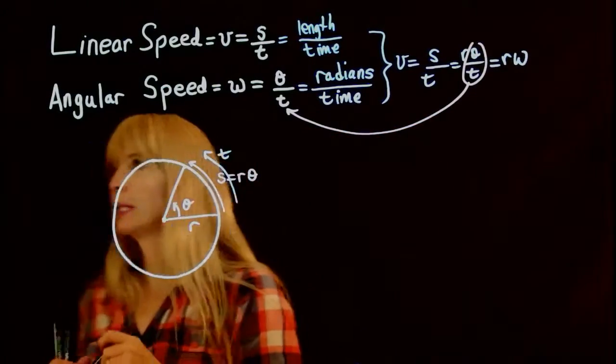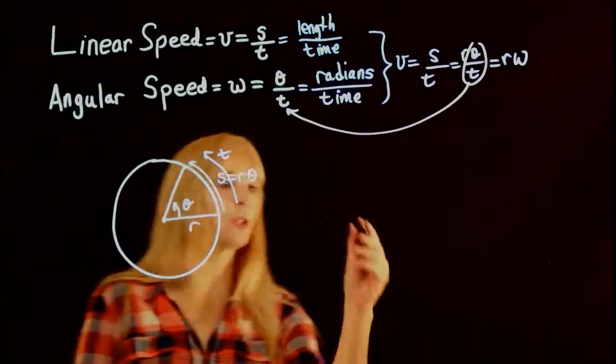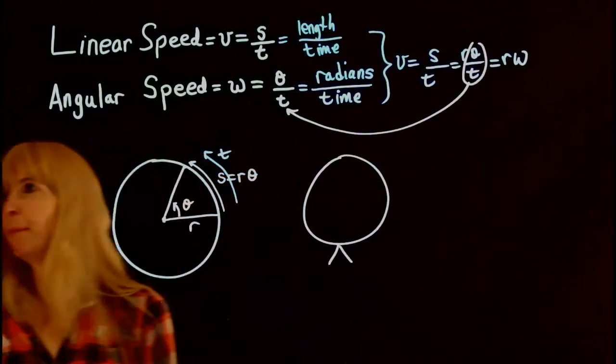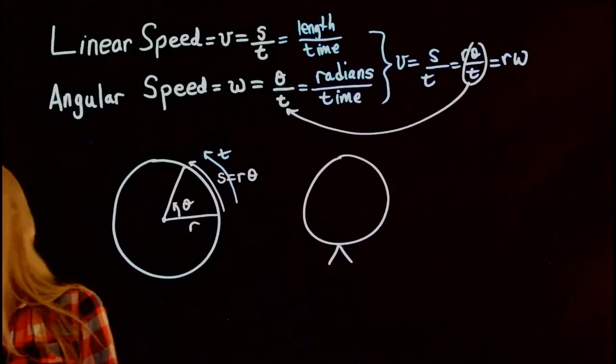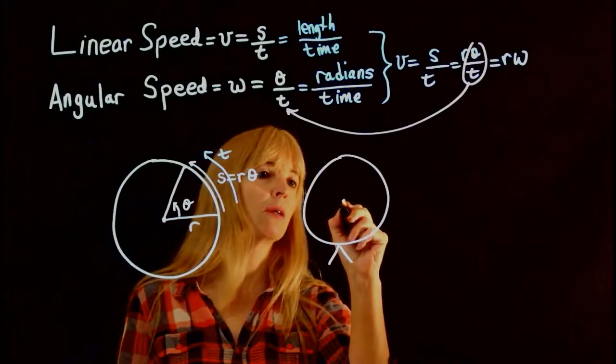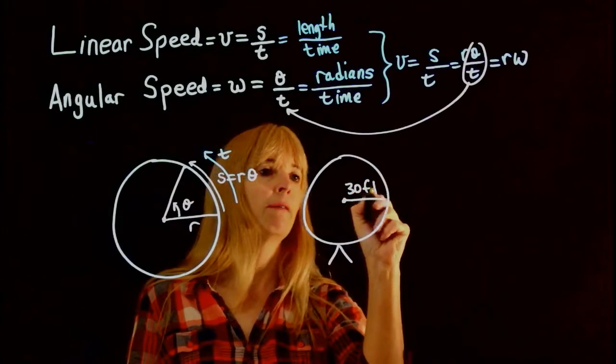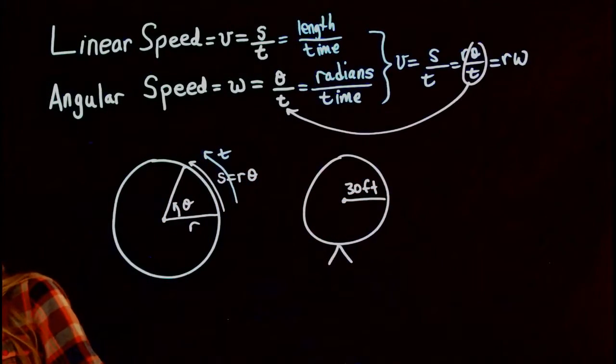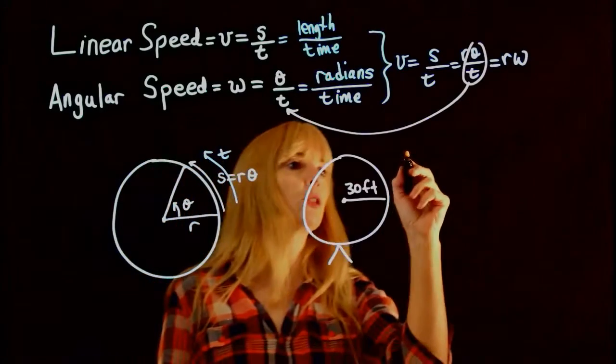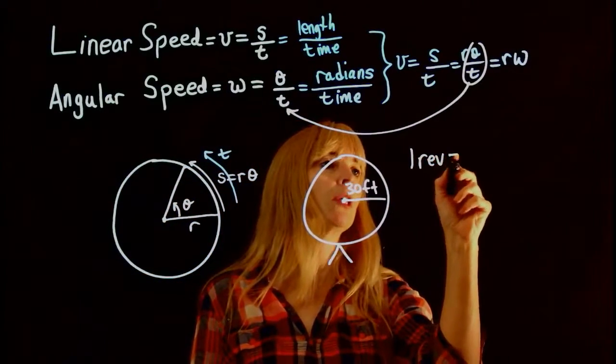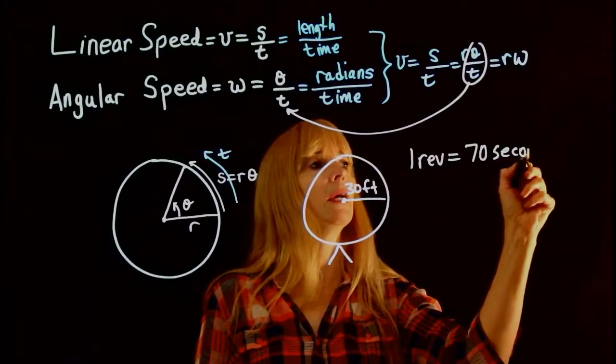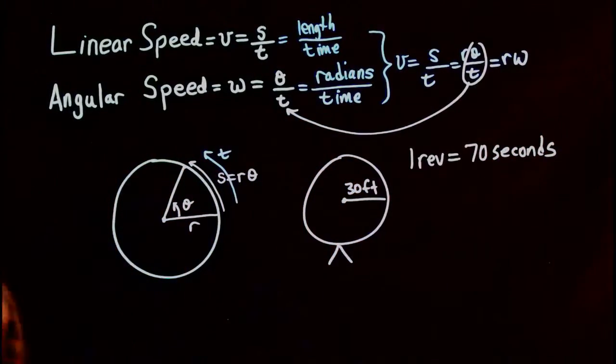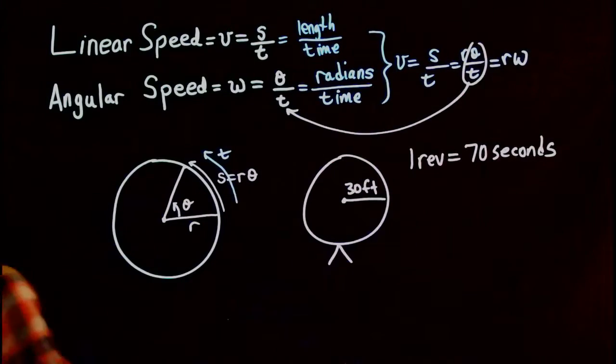So you have a problem that says you have a ferris wheel, and it says that the radius here is 30 feet. And you're told, looking at my cheat sheet over here, that it does one revolution in 70 seconds, and it wants you to find linear and angular speed.